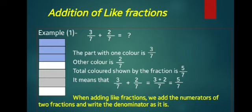It means 3 upon 7 plus 2 upon 7 is equal to 5 upon 7. How do we add both the fractions? First we write the denominator as it is and add the numerators. So, 3 plus 2 upon 7 is equal to 5 upon 7. When adding like fractions, we add the numerators of the two fractions and write the denominator as it is.